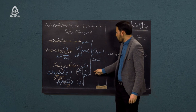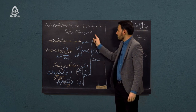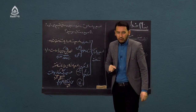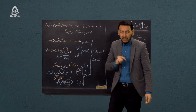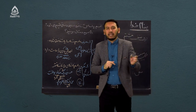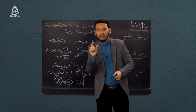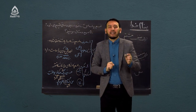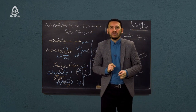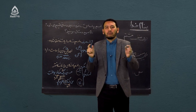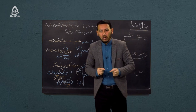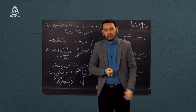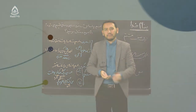به طور کلی، اسم بر اساس شناخت دو دسته بود: یا اسم معرفه بود یا اسم نکره بود. هر کدام دارای نشانه‌هایی هستند که برای شما توضیح داده شد.